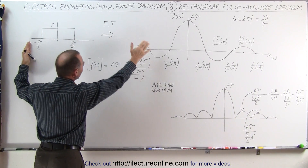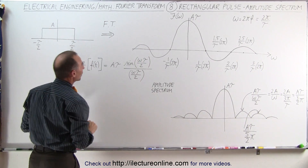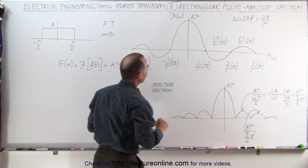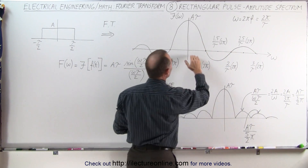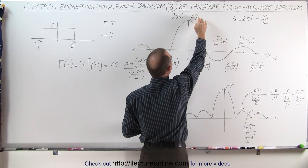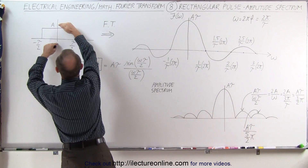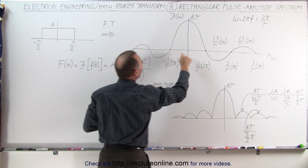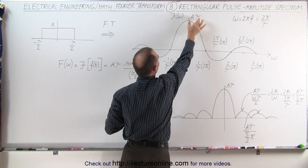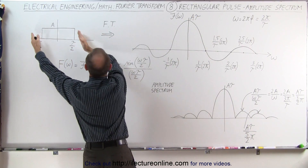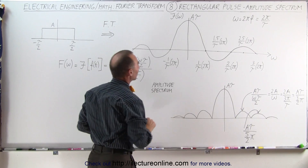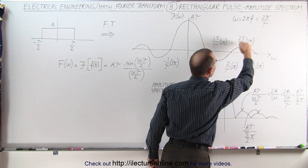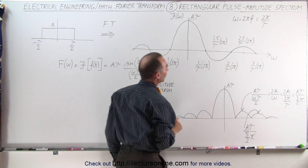If we take the Fourier transform of that, we get this function right here — it looks kind of like a Bessel function. It has an initial amplitude of A times tau, where A is the amplitude of the pulse and tau is the pulse width. So the amplitude here will simply be the product of the amplitude times the pulse width, and you can see how the amplitude tends to oscillate and become smaller and smaller.